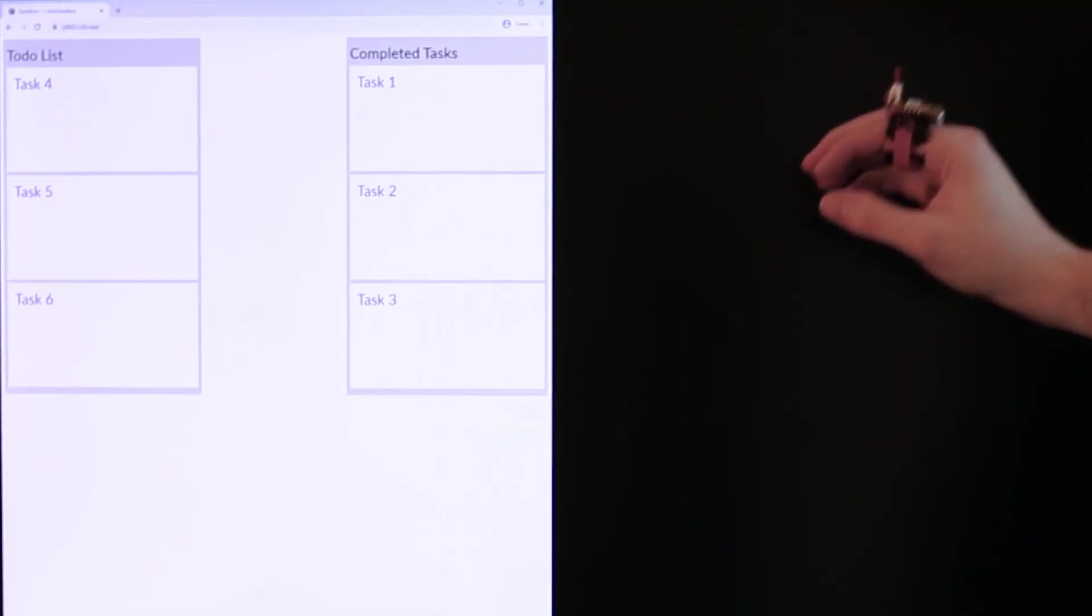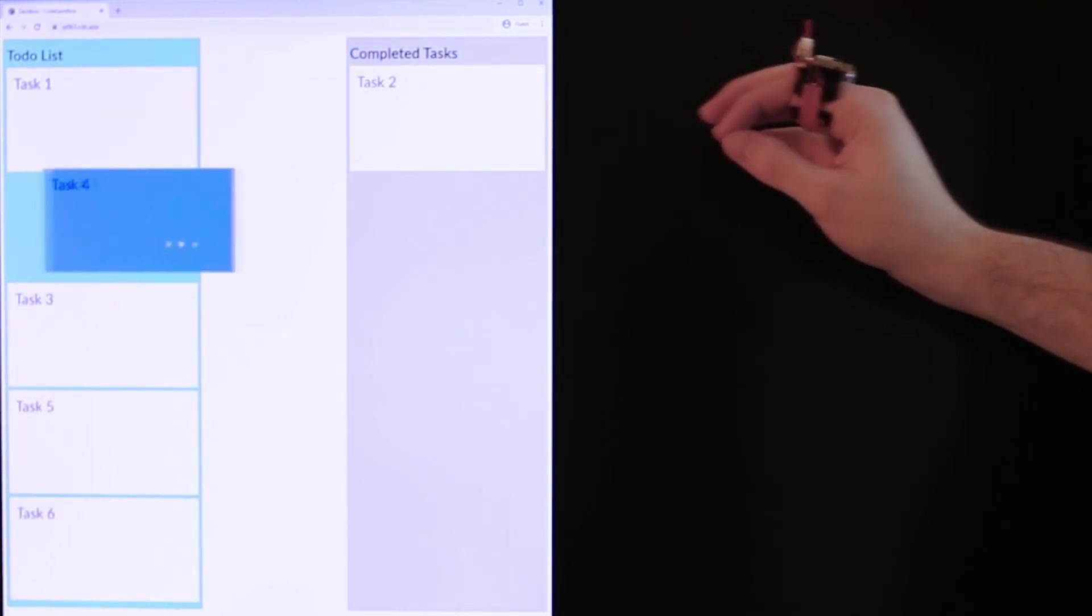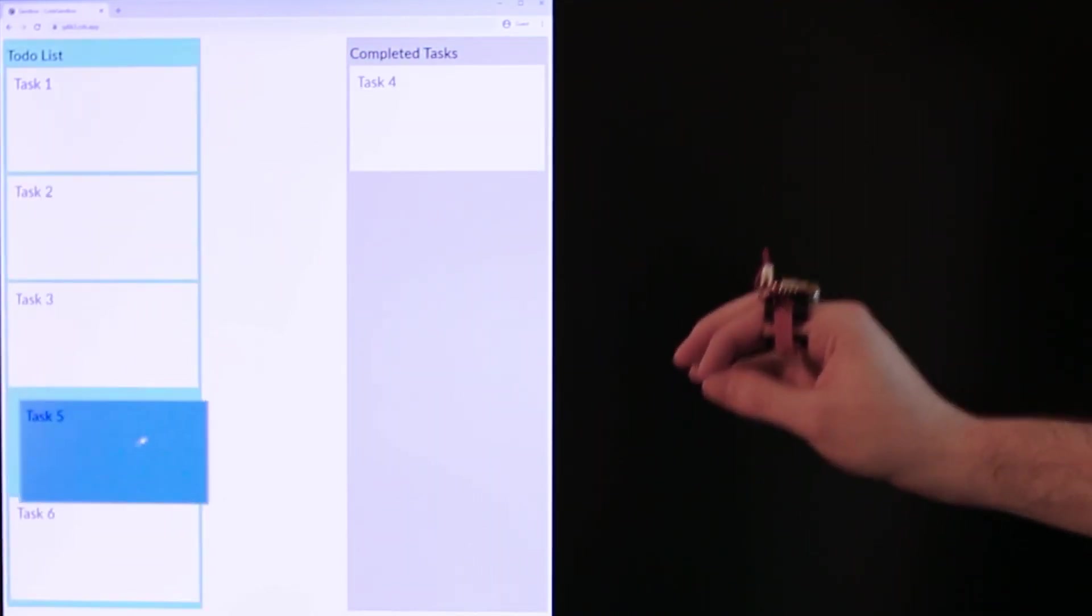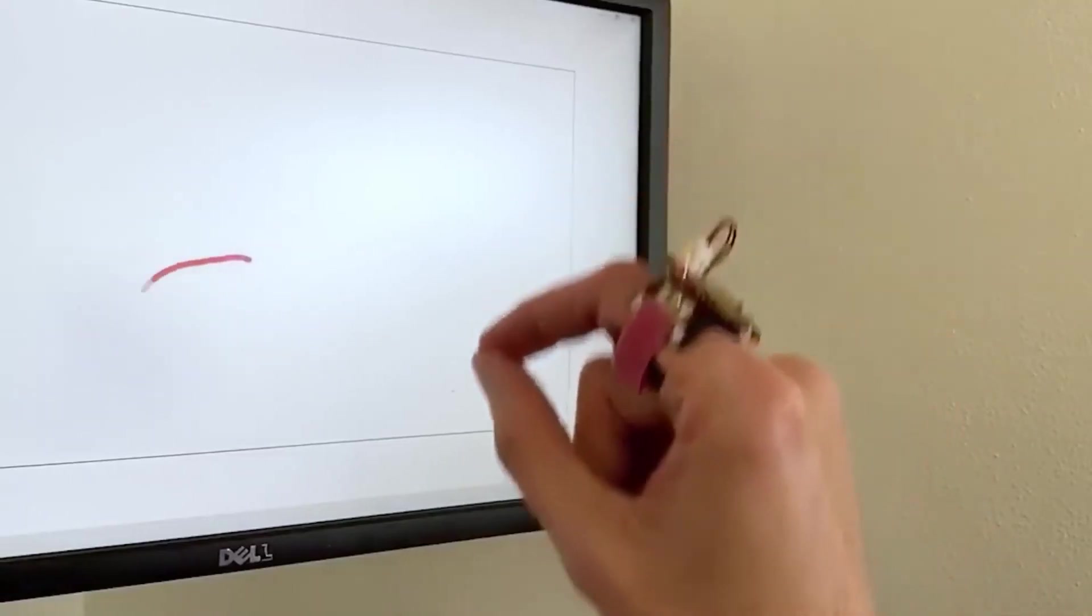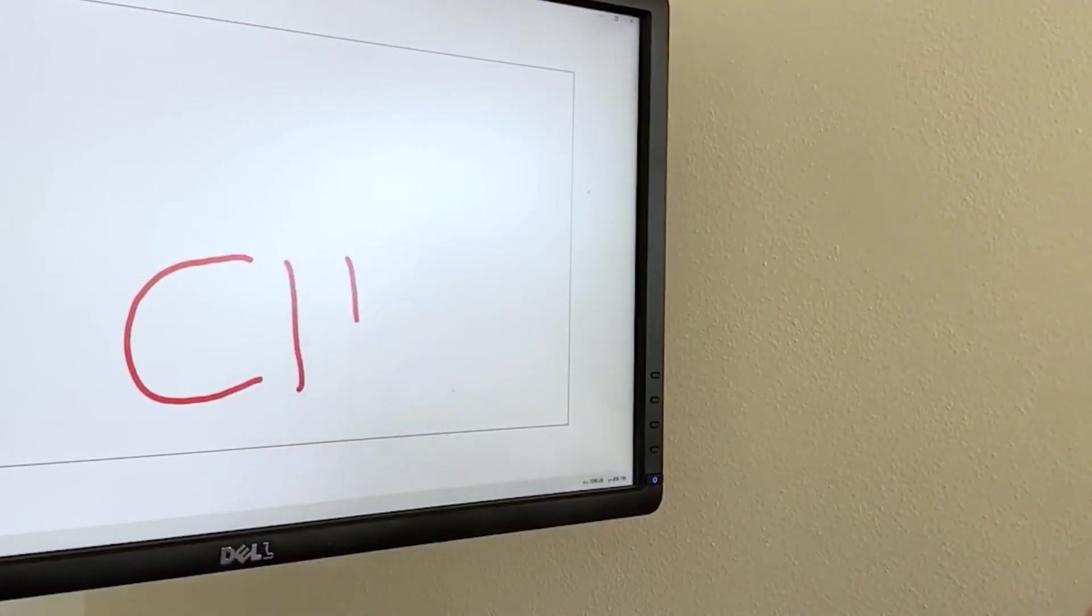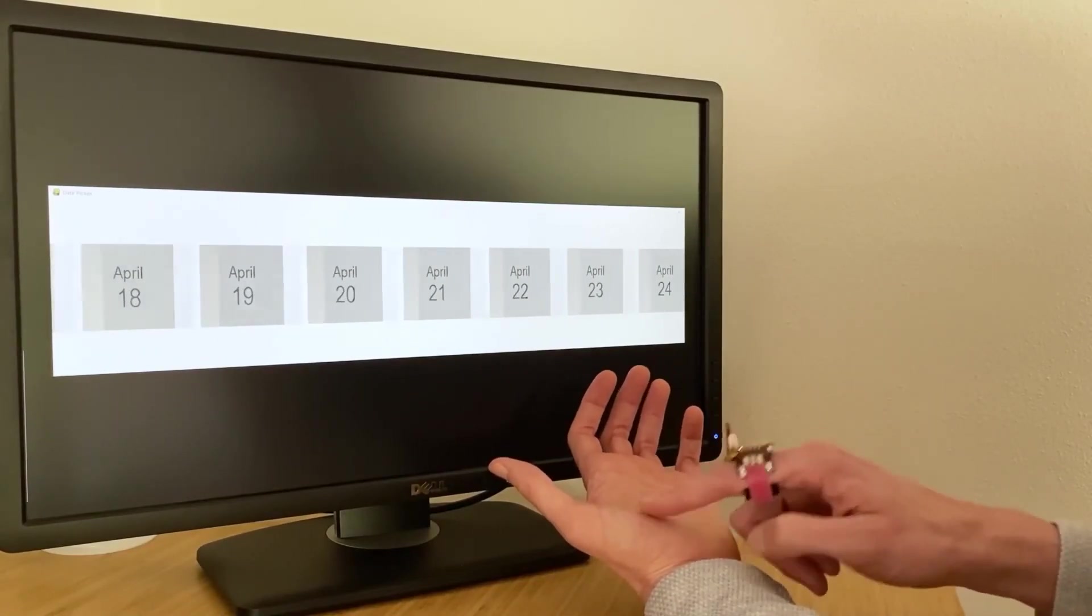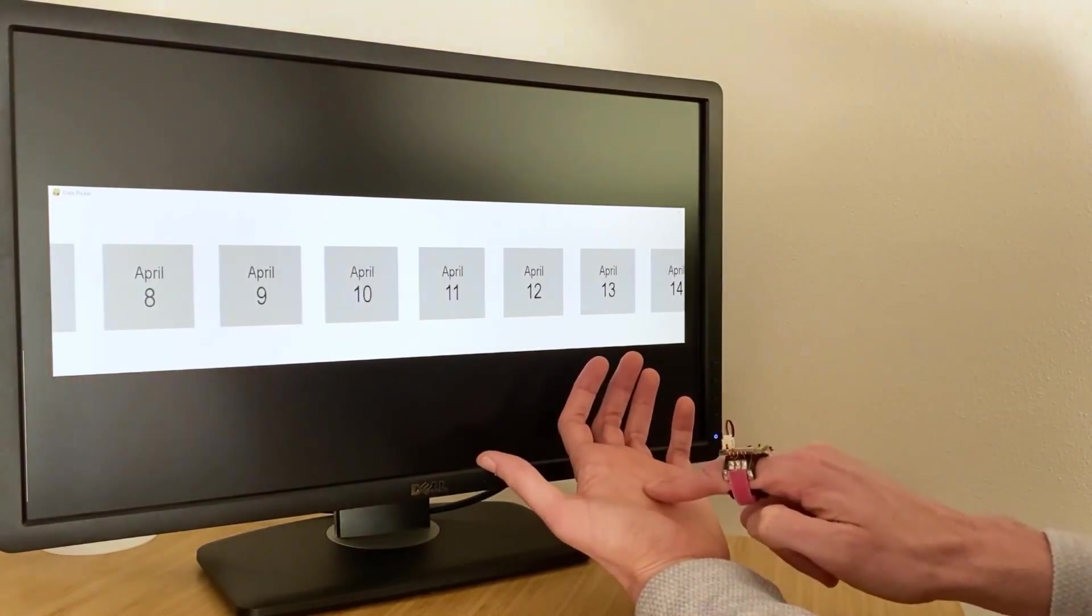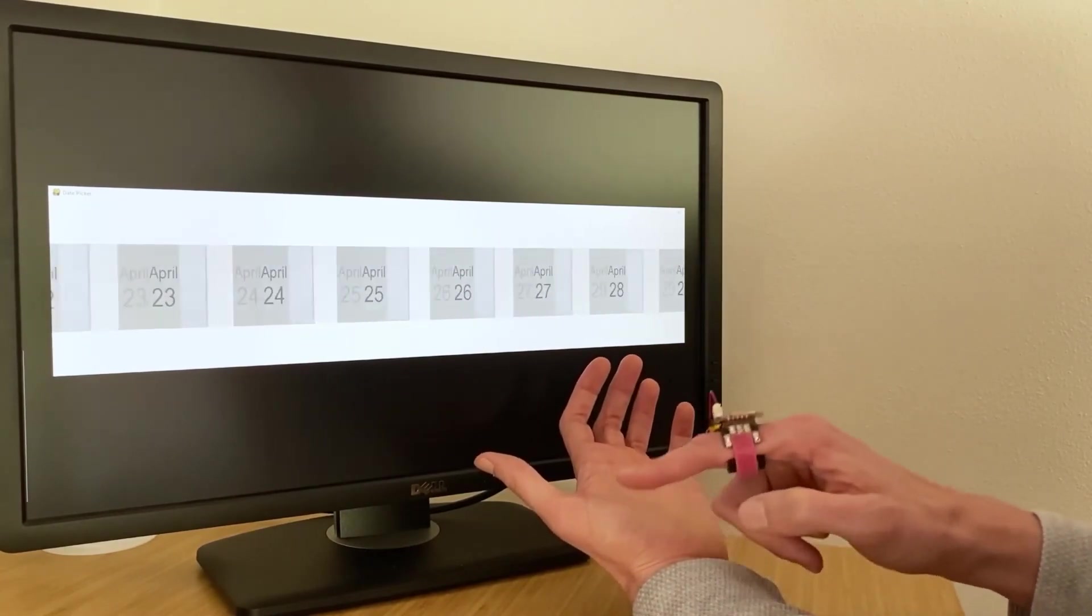We built three application examples to highlight ElectroRing's effectiveness. The first one is drag and drop. Here, the IMU on the ring provides pitch and yaw angles for two-dimensional pointing. The user can drag and drop documents with a subtle pinch, hold, and release gesture. ElectroRing also provides robust pen up and pen down control in a drawing application, as shown in this example. Finally, here's a carousel-style date picker with kinetic scrolling. The user can lightly brush the palm to drag the carousel position, quickly swipe to accelerate, or tap and hold to stop the carousel motion instantaneously and confidently.